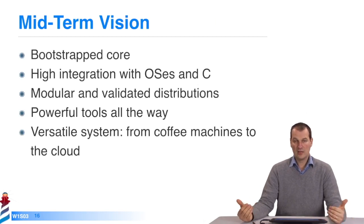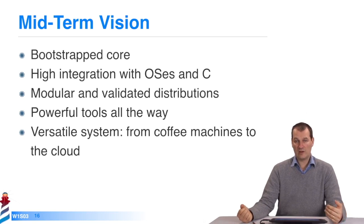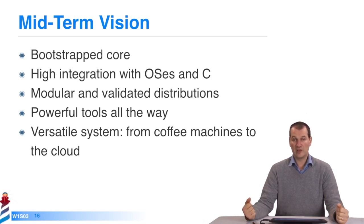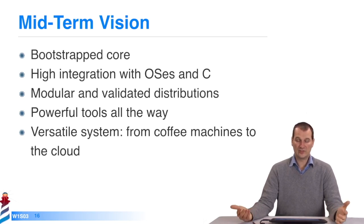I want to talk about the mid-term vision of FARO — what will FARO be in about five years? The core will be bootstrap, meaning we'll be able to reconstruct it from itself, which isn't possible at the moment. We'll have better integration with OSes and SEA — we can imagine launching a FARO app in any SEA application. It'll be a more modular system with validated distributions. If someone writes an XML parser, you'll want to know if it's passed all the tests, if it functions in whatever version of FARO, if the non-regression rules are satisfied — really using software engineering to validate what is made around the world, so people using FARO can be assured of the level of quality.